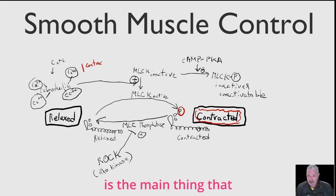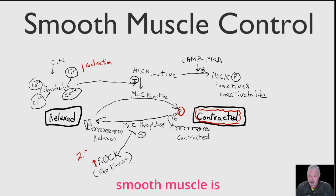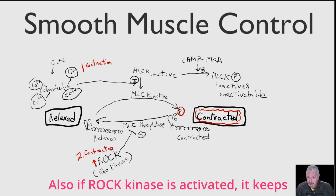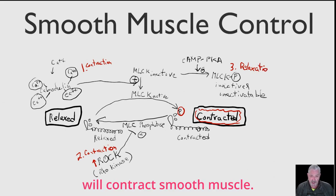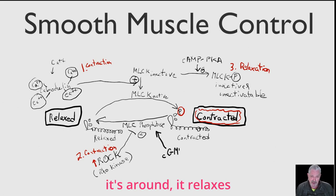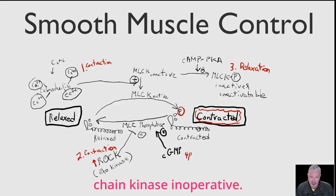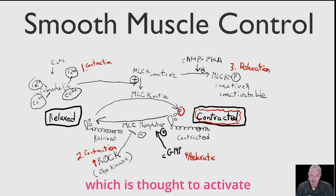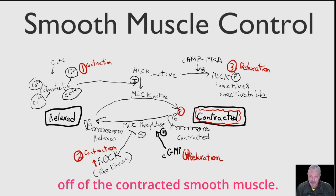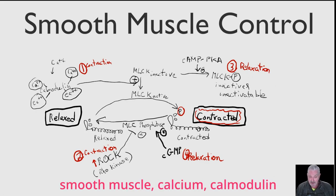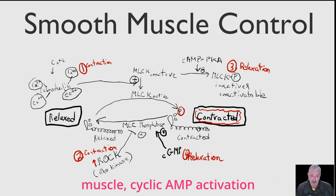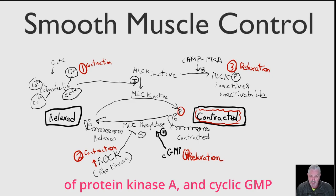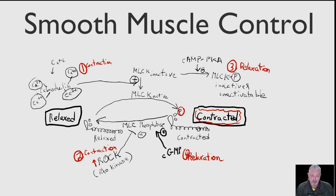The control systems: the main thing that activates or contracts smooth muscle is calcium binding to calmodulin. Also, if ROC kinase is activated, it keeps the phosphates on the light chains, and that also will contract smooth muscle. Cyclic AMP relaxes smooth muscle by making myosin light chain kinase inoperative. A fourth factor is cyclic GMP, which is thought to activate myosin light chain phosphatase and increase the rate at which phosphates are taken back off the contracted smooth muscle. So we have two things that contract smooth muscle — calcium-calmodulin complex and increased ROC kinase activity — and two things that relax smooth muscle — cyclic AMP activation of protein kinase A, and cyclic GMP increasing the activity of myosin light chain phosphatase.